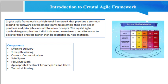Crystal Clear: less than 8 members. Crystal Yellow: 10 to 20 members. Crystal Orange: 20 to 50 members. Crystal Red: 50 to 100 members.